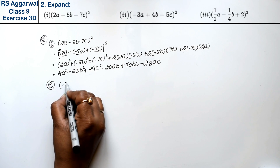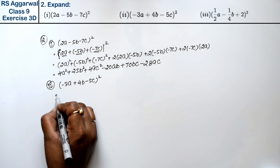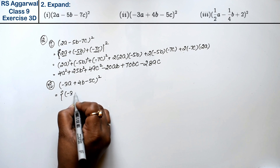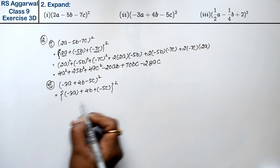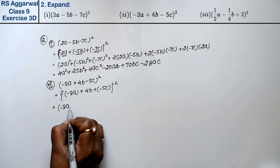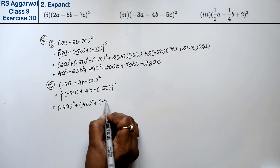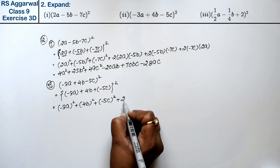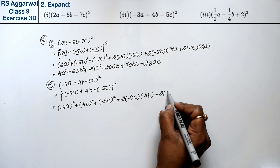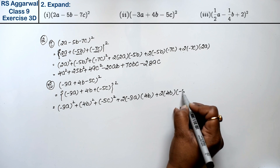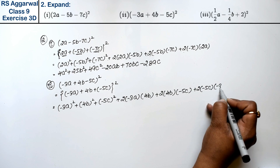Let's do the second part. Second part is (minus 3A plus 4B minus 5C) whole square. We write it as (minus 3A) plus (4B) plus (minus 5C) whole square. Substituting: A in place of minus 3A, B in place of 4B, and C in place of minus 5C.